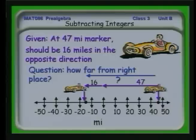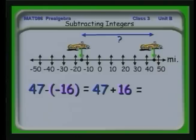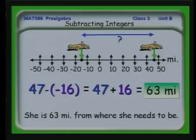The distance is larger than either 47 or 16, and intuition tells us to add them. Whenever you hear 'difference,' think subtraction. We're at the 47-mile marker and need to be at minus 16. The difference is 47 minus a minus 16, and since we have a minus a minus, that equals 47 plus 16. We are actually 63 miles from where we need to be.